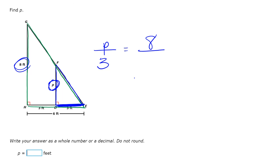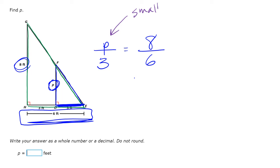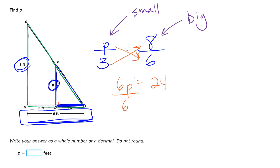For our small triangle, the side D to E is 3 feet, and that's proportional to the total distance of 6 feet in the big triangle. Right now we have our small triangle information and our big triangle information — the pieces going up and down are our numerators, and the pieces going left to right are our denominators. So let's cross multiply — we have 6P equal to 24. Dividing both sides by 6 gives us P equal to 4 feet. The biggest thing is to make sure you set up your proportion correctly, and you'll be the master of similar figures.